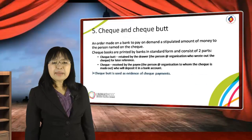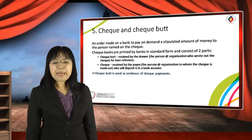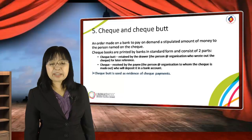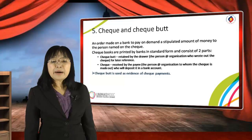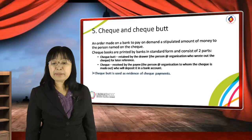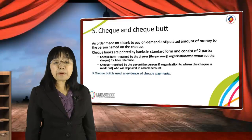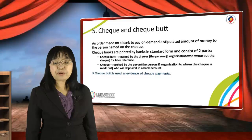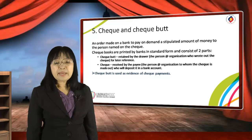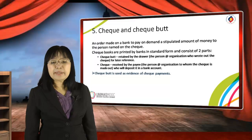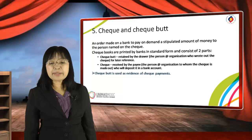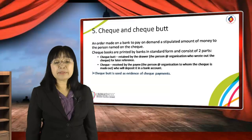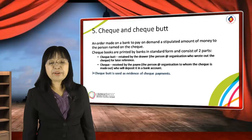Check and check part. A check is an order made by a bank to pay on demand a stipulated amount of money to the person named on the check. Checkbooks are printed by banks in standard form and consist of two parts: the check part, which includes the name of the drawer, and the check portion received by the payee — the name of the person or organization to whom the check is made out, who will deposit it in their bank account. The check part is used as evidence of check payments.